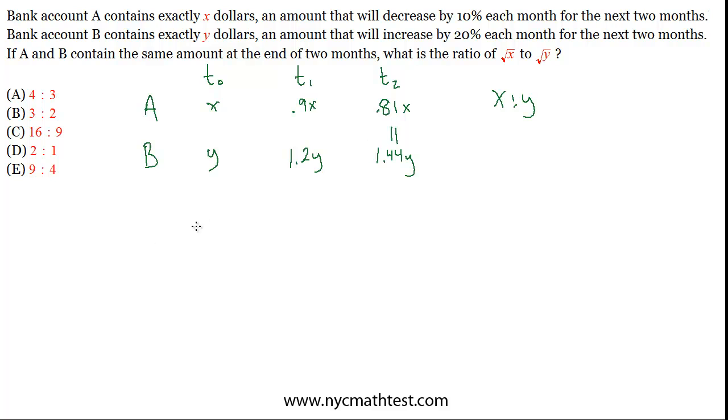If .81X is the same as 1.44Y, then let's solve for X over Y. So, we'll divide both sides by Y, so we get .81X over Y equals 1.44, and then we'll divide both sides by .81, so now we get X over Y equals 1.44 over .81.